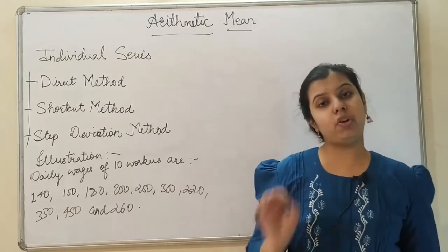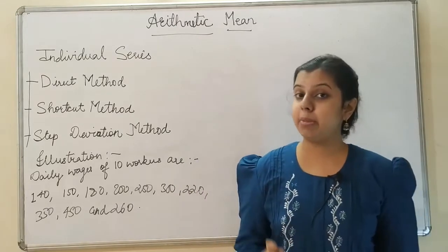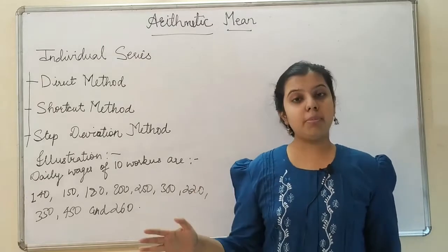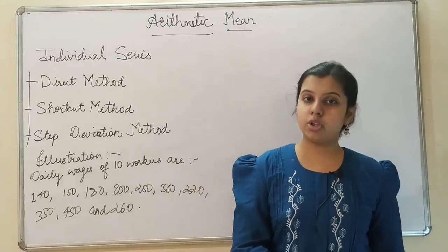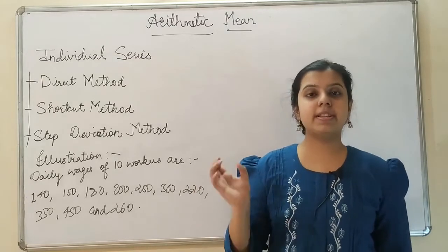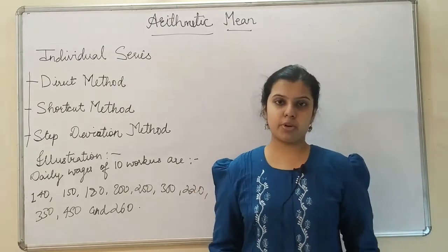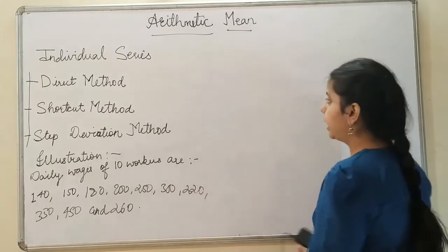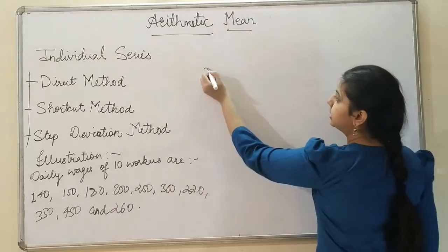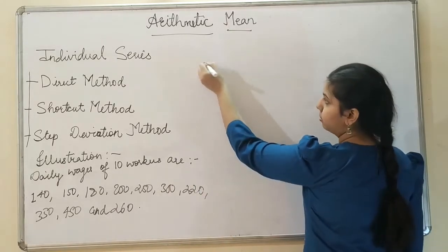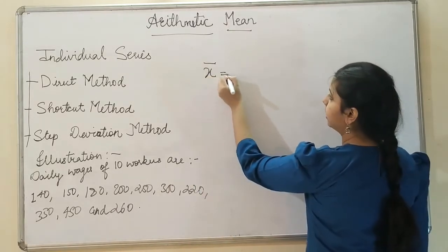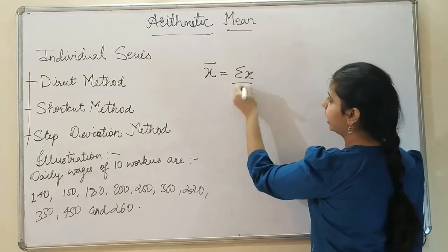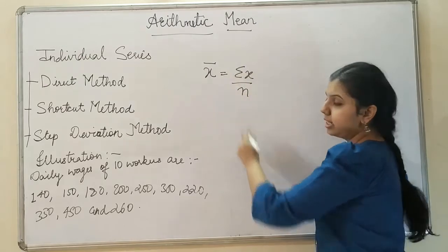The simple formula for arithmetic mean is the sum of all the observations divided by the total number of observations. Arithmetic mean is denoted by x-bar, so x-bar is equal to sigma X divided by n. This is the formula for a simple arithmetic mean.